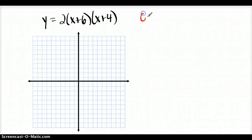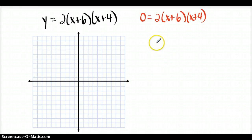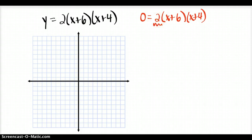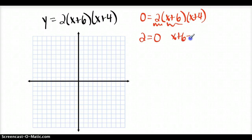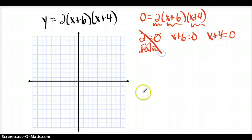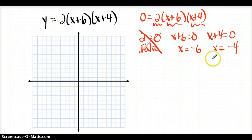For the next problem, you find x-intercepts the same way — set y equal to 0 and solve for x. Now, that 2 out front is like the a-value, the same as in standard form and vertex form. A value of 2 makes the parabola narrow and it opens up. When you set that 2 equal to 0, that's a false statement, so it just goes away. Solving the two remaining pieces, you get x equals negative 6 and x equals negative 4.